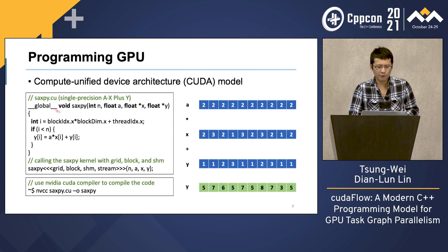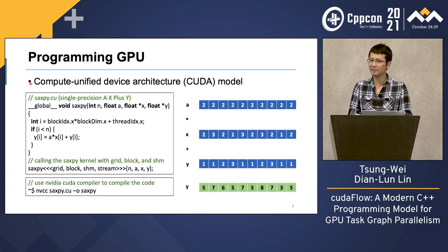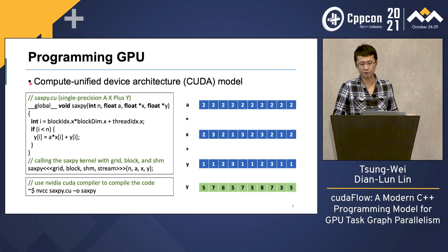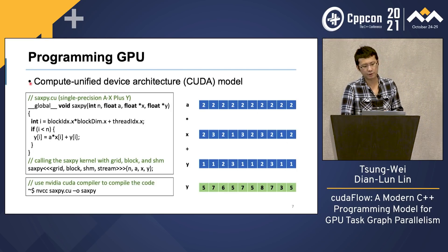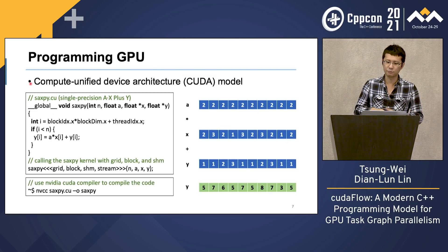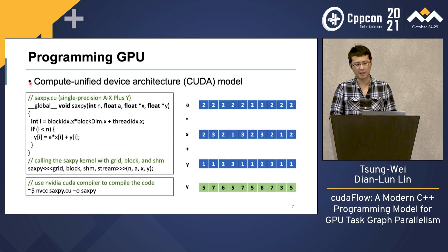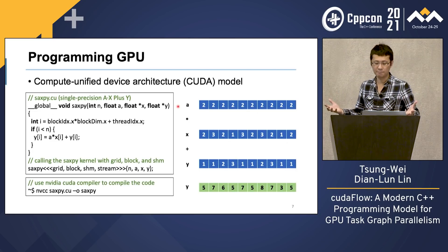There are many ways to program GPU. Most of the time it depends on the GPU you are using. For example, if you are using Intel GPU, you might use SYCL. If you are using AMD GPU, you can use OpenCL. For this talk, we are going to focus on CUDA, the Compute Unified Device Architecture programming model designed to run on NVIDIA's GPU. Specifically, we focus on the new CUDA graph programming model. Here I am showing a simple example, the hello-world program for learning CUDA, which computes the SAXPY single precision AX plus Y operation on GPU.